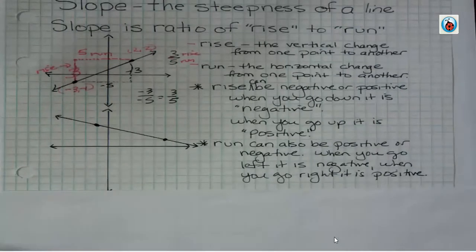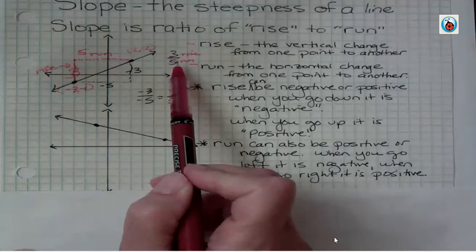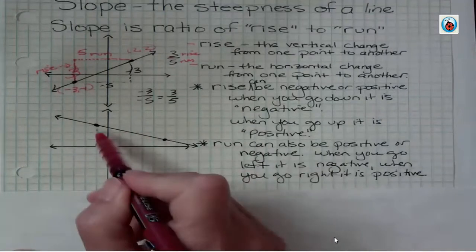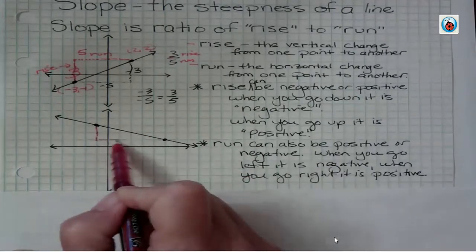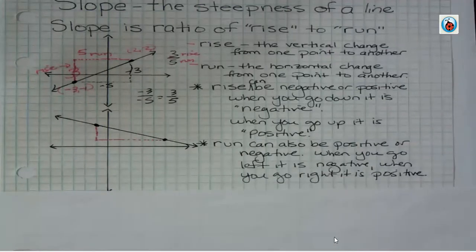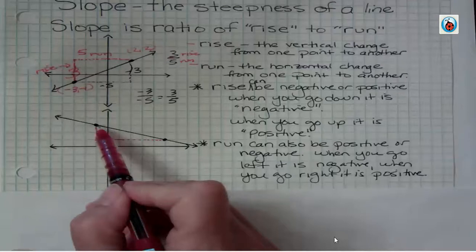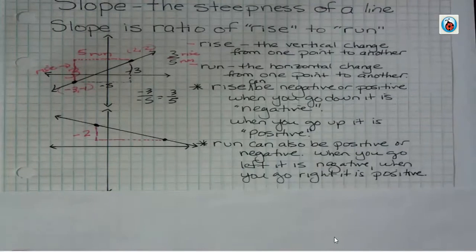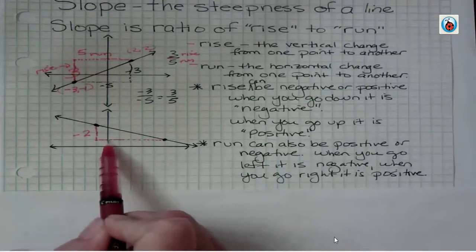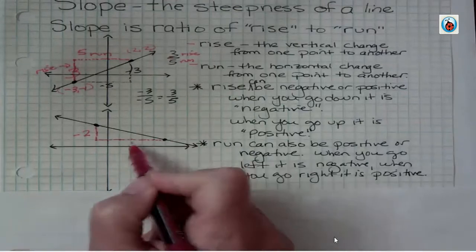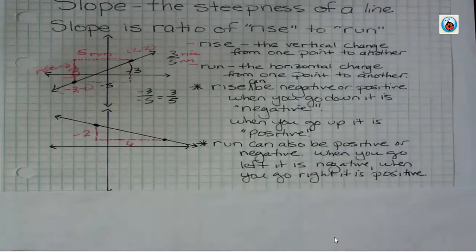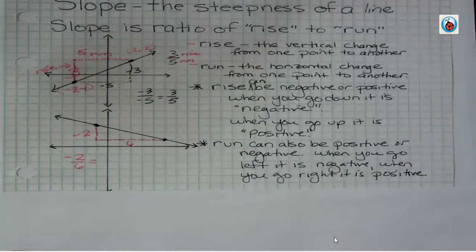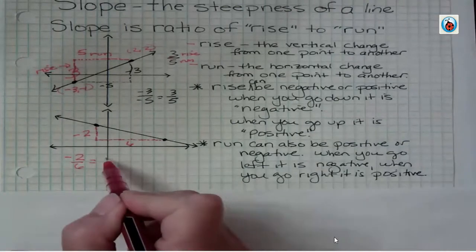This next line, I'm going to start with the leftmost point and go to the right. Rise is the vertical movement — up and down — and from here I'm actually going down two, so my rise is negative two. Then I'm going six places to the right. So my slope, when I look at rise over run, is negative two over six. I always want to reduce to lowest terms, so dividing both by two gives a slope of negative one-third.